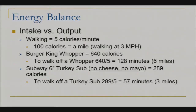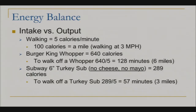Let's look at a lower calorie alternative with the same volume of food but far fewer calories. A Subway 6-inch turkey sub with no cheese and no mayonnaise has 289 calories. So to walk that turkey sub off, burning 5 calories per minute, you'd have to walk for 57 minutes, or 3 miles — half the exercise because there's half the calories.